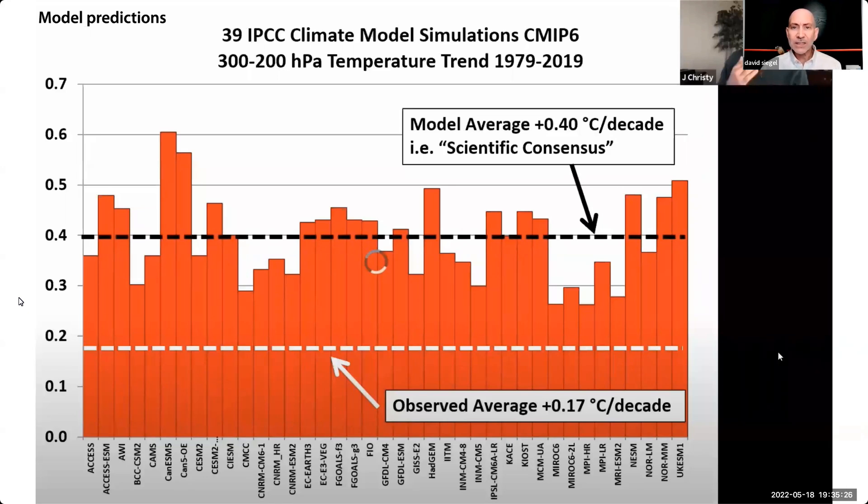All the models say we should see a 0.4 degree rise per decade in the tropical troposphere around 30,000 feet above the equator. And yet, satellites and weather balloons measurements say no. The average there is only 0.17 degree per decade, which has probably been there since about 1800 or so. Models all predict higher temperatures should be there right now, and they aren't.